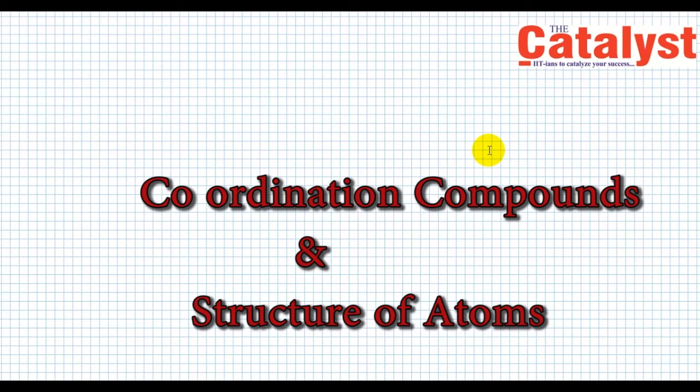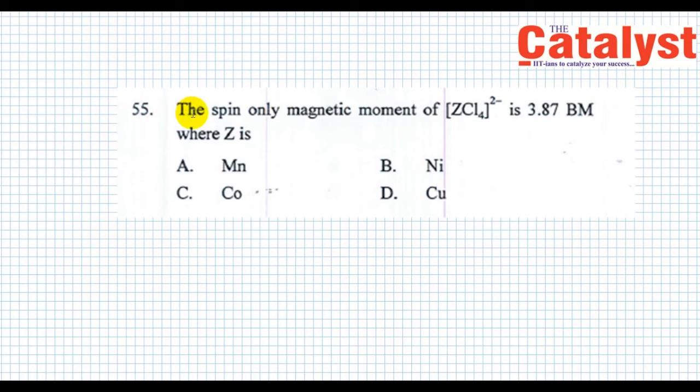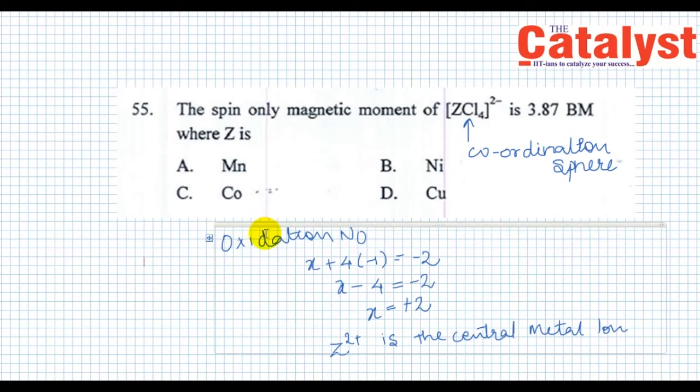As I said earlier, the next question is a combination of class 11th and class 12th concepts. Let us check what this question is all about. Question number 55: the spin-only magnetic moment of [ZCl₄]²⁻ is 3.87 Bohr magnetron, where Z is (A) manganese, (B) nickel, (C) cobalt, and (D) copper. In the coordination sphere [ZCl₄]²⁻, the oxidation number of Z metal (the central metal ion) would be +2: x + 4×(−1) of chlorine equals −2.